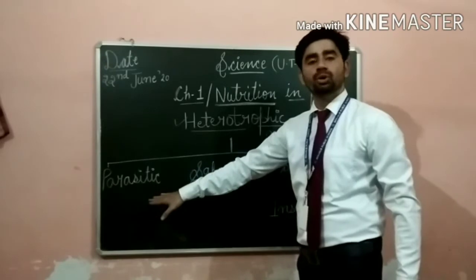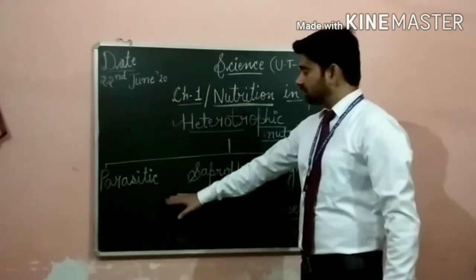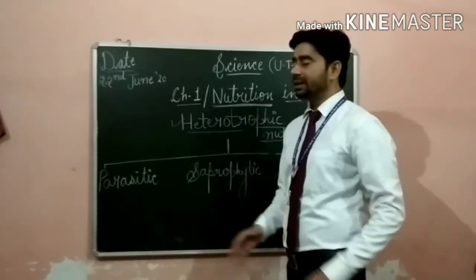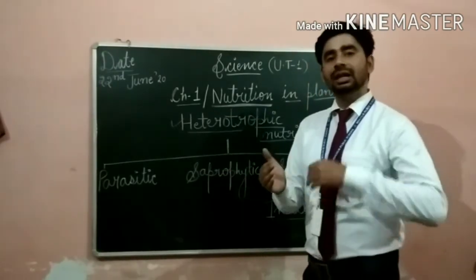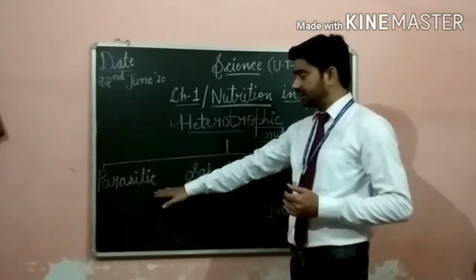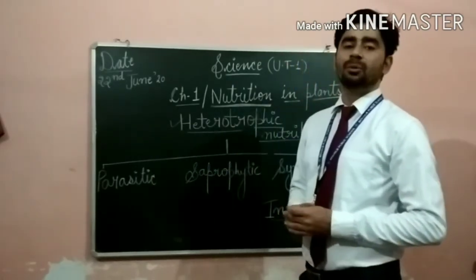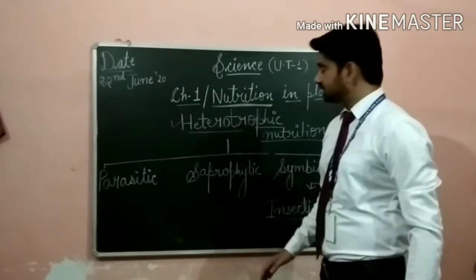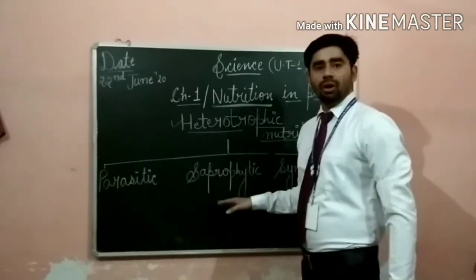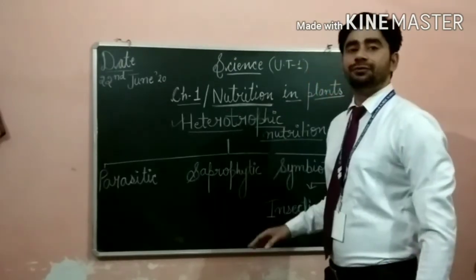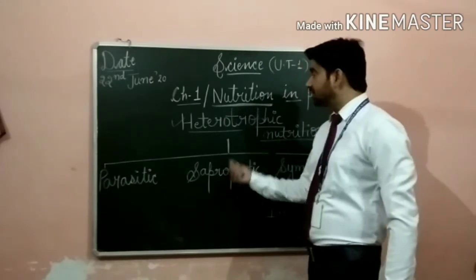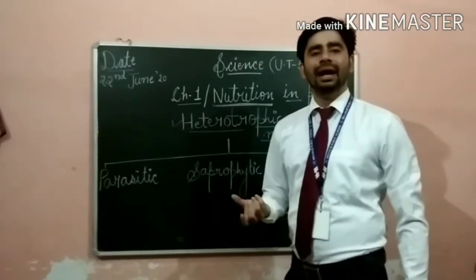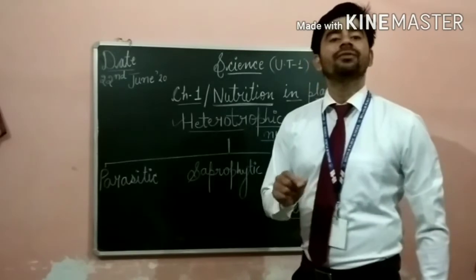The first one is parasitic mode of nutrition. In this, organisms live on or inside the body of other organisms to derive their food. Organisms that derive their nutrition from dead and rotten organisms are called saprotrophs and the nutrition is called saprophytic nutrition. For example, in the rainy season, you may have seen white powder-like substance on your leather shoes or belts — this is fungal growth, that is saprophytes.